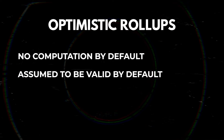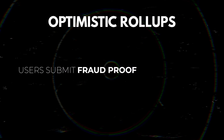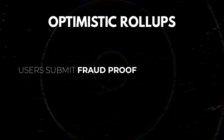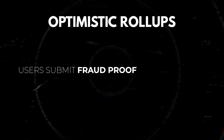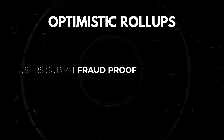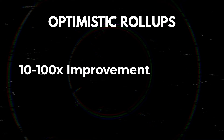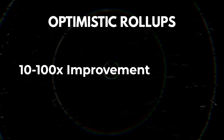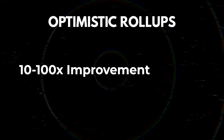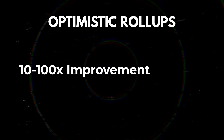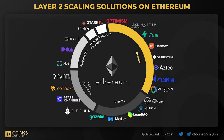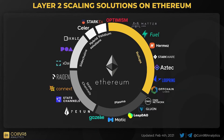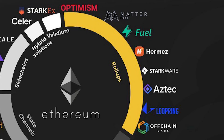Optimistic rollups do not do any computation by default — instead, transactions are assumed to be valid by default. Users only submit fraud proofs if they see any mathematically verifiable misbehavior. As computation is a slow, expensive part of using Ethereum, optimistic rollups can offer up to 10 to 100x improvements in scalability depending on the transaction. Projects using optimistic rollups include Optimism, Offchain Labs (which is Arbitrum), Fuel Network, and Cartesi.